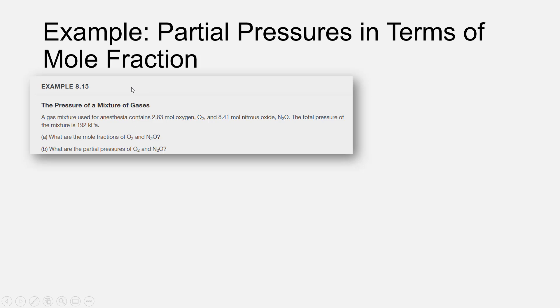This is example 8.15 in your OpenStax textbook, and we're looking to calculate the pressure of each gas in a mixture of two gases. The two gases in question are dioxygen O2 and nitrous oxide N2O. Nitrous oxide is what's more commonly known as laughing gas and would be a general anesthetic.